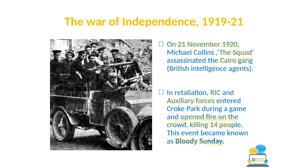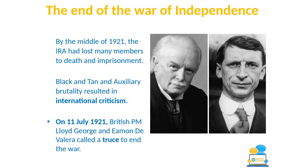By mid-1921 the War of Independence was nearing its end. The IRA had lost many members — killed or imprisoned — and was running low on capacity. Meanwhile, the Black and Tans' brutal attacks on the Irish population were generating serious international criticism, with countries like America condemning Britain for murdering civilians. Eventually, on July 11th 1921, British Prime Minister Lloyd George and Éamon de Valera, then the unofficial President of Ireland, called a truce to end the war.